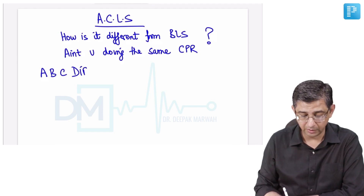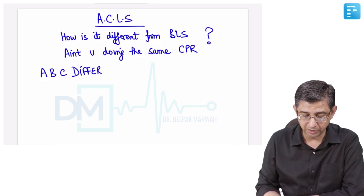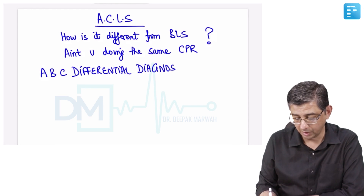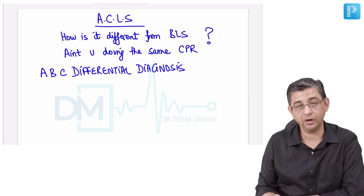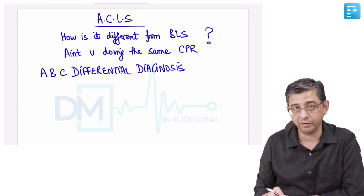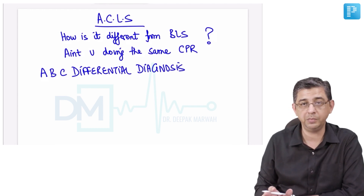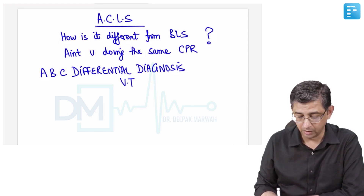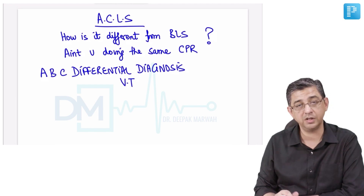The fundamental difference is that here you are making a differential diagnosis in the patient — that is A, B, C, D — the D stands for differential diagnosis. That is being done by the doctor to identify why the patient became pulseless. It could be ventricular tachycardia: a broad complex QRS where the heart is beating very fast.